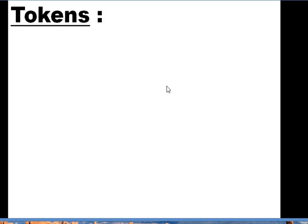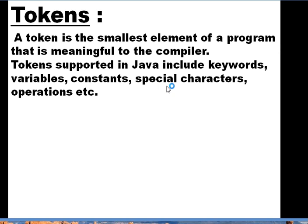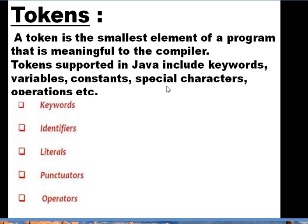Now we move on to the next concept. Whenever we create a Java program, there are certain terms we need to understand. The first term is token. A token is the smallest element of a program that is meaningful to the compiler. Tokens supported in Java include keywords, variables, constants, special characters, operators, etc. Prime examples of tokens are keywords, identifiers, literals, punctuators (also called separators), and operators.